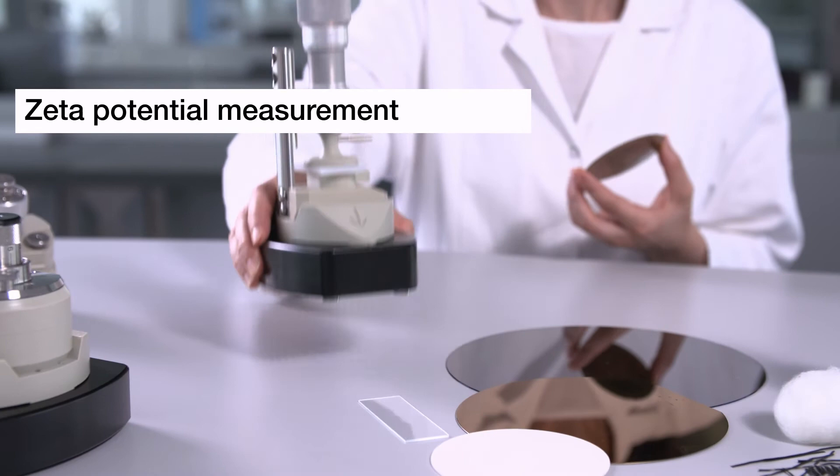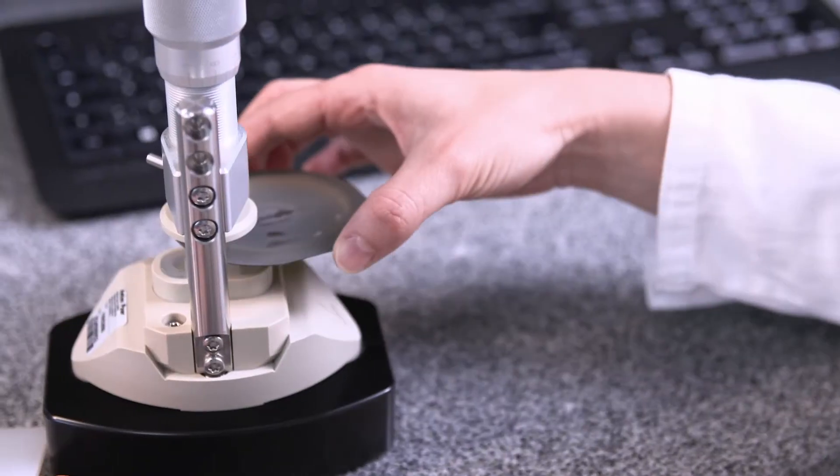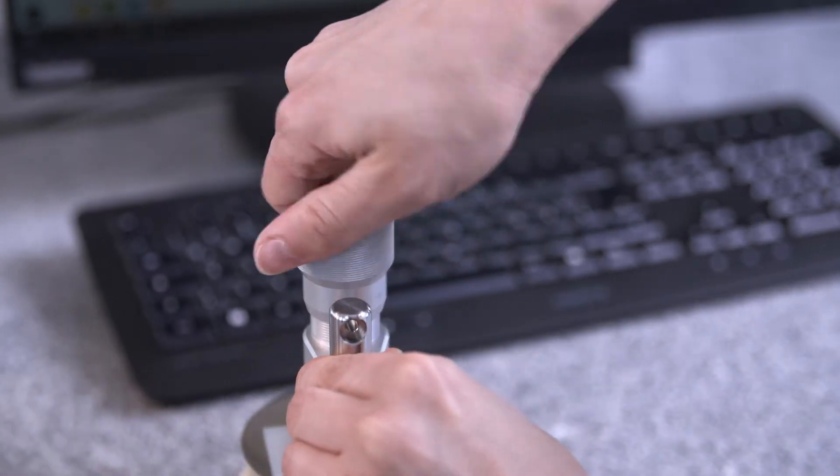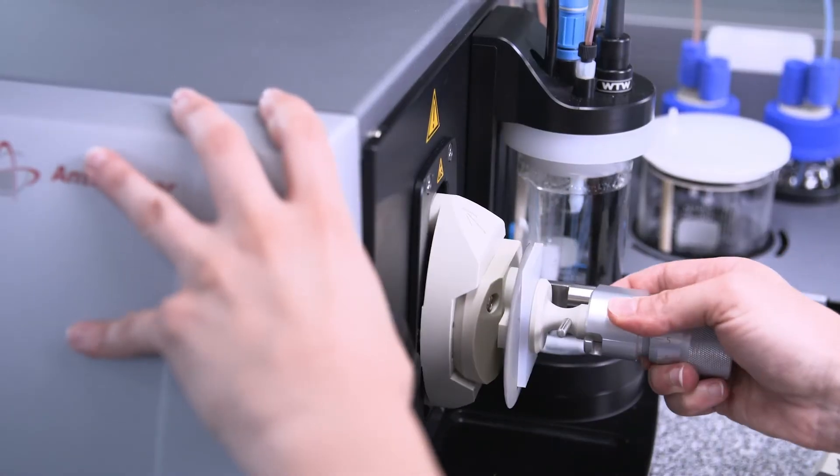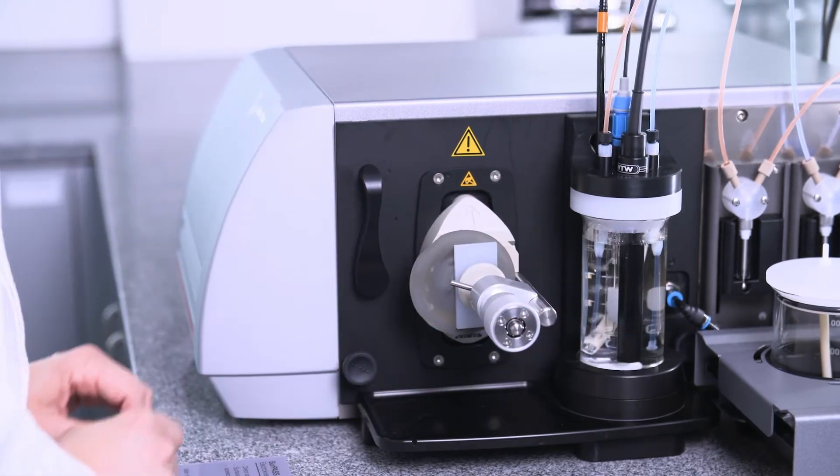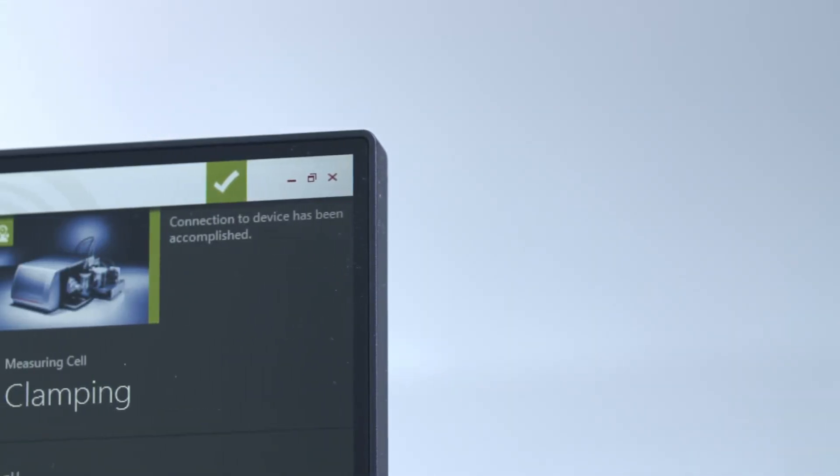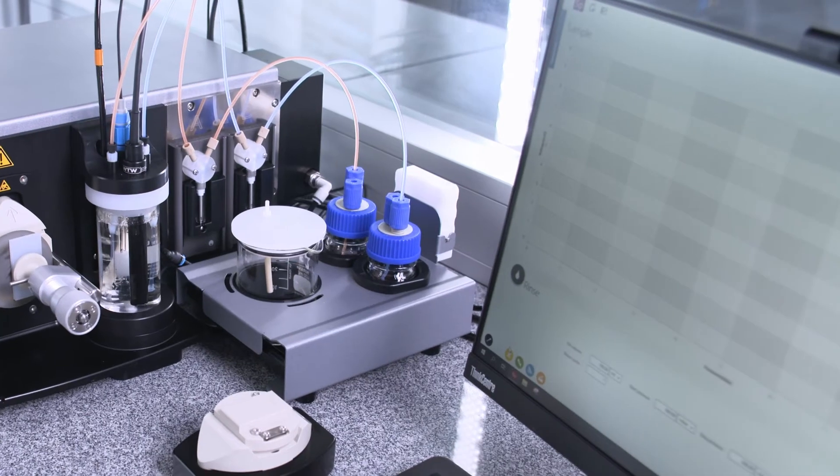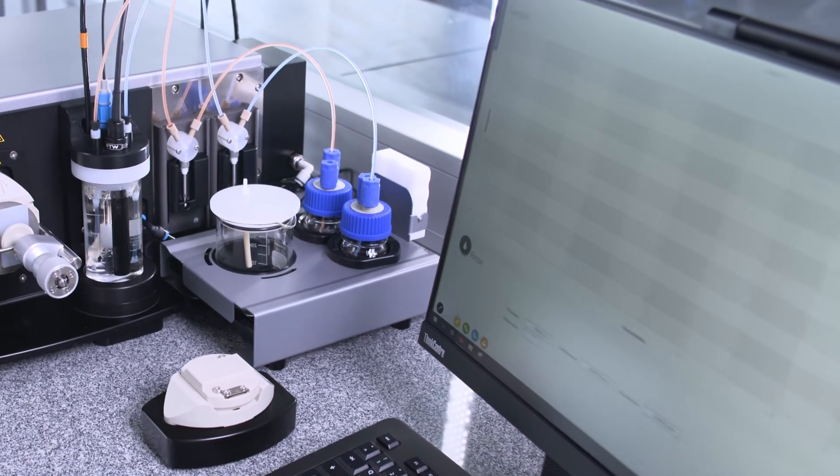To perform a zeta potential measurement, the sample is mounted in a suitable measuring cell. Once the measuring cell is attached to the main instrument, the Surpass 3 software automatically detects it. This plug-in and start functionality lets you exchange measuring cells quickly and easily.